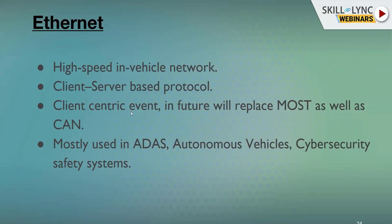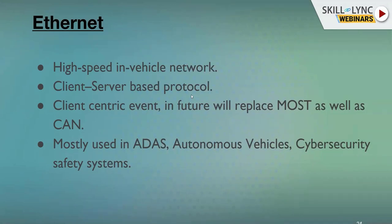Ethernet is client-centric and in the future will replace MOST as well as CAN. Communication uses IP addresses. Ethernet is mostly used in ADAS, autonomous vehicles, and cybersecurity safety systems — cruise control, radar, lidar, and autonomous vehicles like Tesla use Ethernet because it is very high-speed and reliable. Cars connected to the internet also need cybersecurity to be hack-proof.